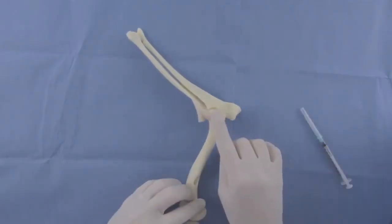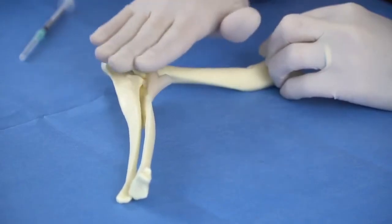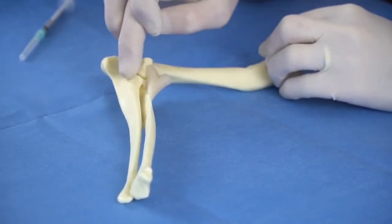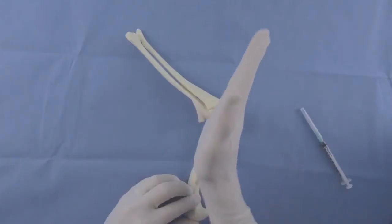First approach. Locate the epicondyle. Flattening your fingers can aid with palpation. The injection site is distal to the epicondyle.